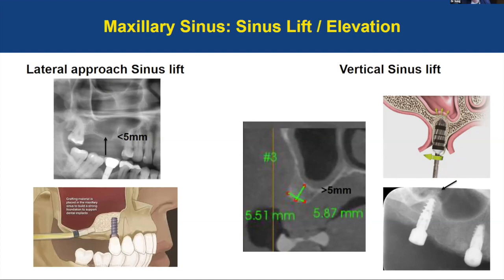In case of a small sinus membrane perforation, usually with the lateral window approach, we can place a collagen membrane to patch the perforation. If there is a large sinus perforation, we need to open our window a little more to reach the area of the intact membrane and re-engage it in the area that is not torn.